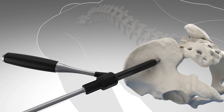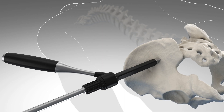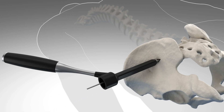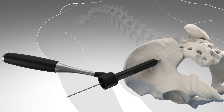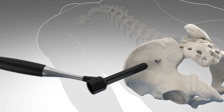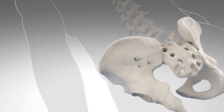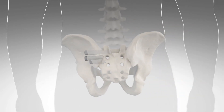This is an outpatient, minimally invasive procedure done by making a small incision and placing two or three implants across the SI joint. The patients are discharged home the same day and typically follow up with me a week later. We may or may not do physical therapy postoperatively depending on how the patient is doing.